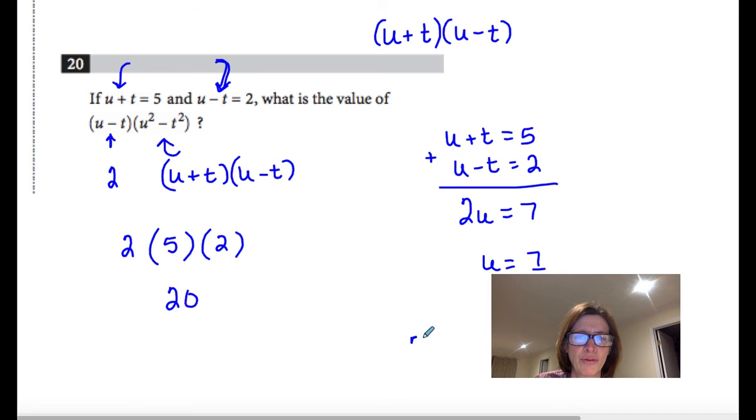All right. Then you have to plug it in. So 7 over 2. You'd have to find t. So you'd have to do the same thing, find t, plug it in, square them, add them together, multiply them. You're going to run out of time.